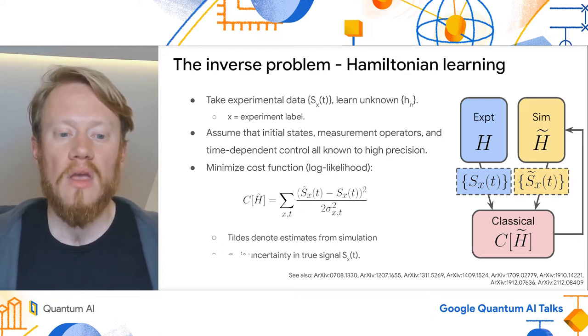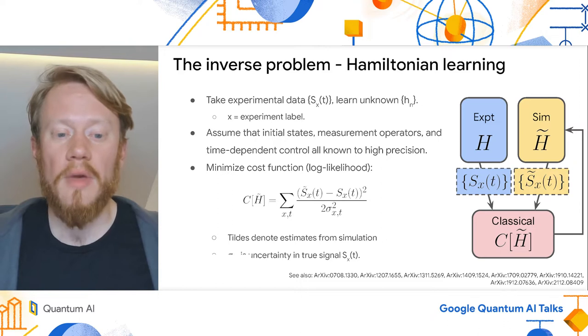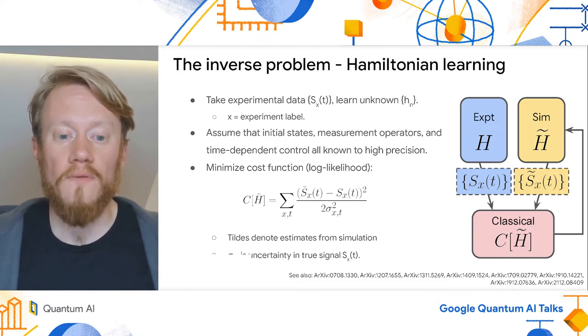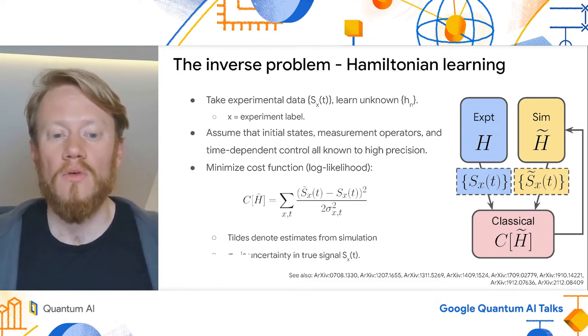The problem is simple enough to state: given a dataset of S_x(t), learn the unknown coefficients of the Hamiltonian, those H_n that were described on the previous slide. For simplicity, I'm going to assume everything else in this problem is known, but there's no reason this can't be relaxed.